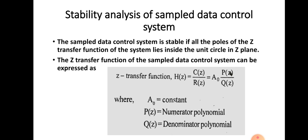We have studied the stability condition in the case of Laplace transform or S-domain, where all the poles should lie on the left half of the S-plane. When we come to the Z-plane or Z-transform, the sample data control system is stable if all the poles of the Z transfer function lie inside the unity circle in the Z-plane. That is the condition.